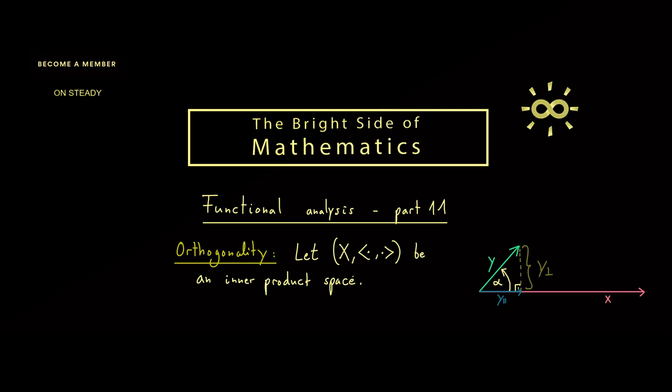This is simply defined by looking at the inner product which should be zero. In other words, when we have an inner product we can use it to define the notion orthogonal. And then of course we can also use the common symbol between the two vectors.